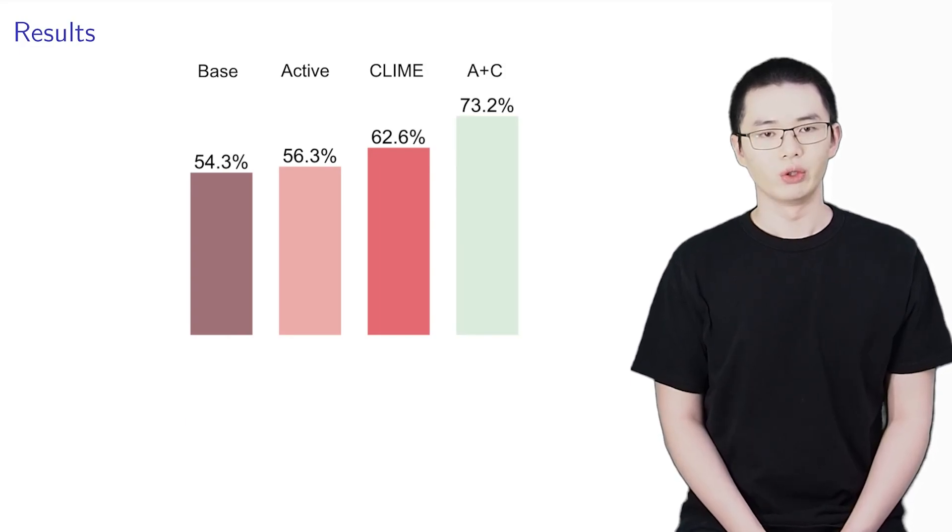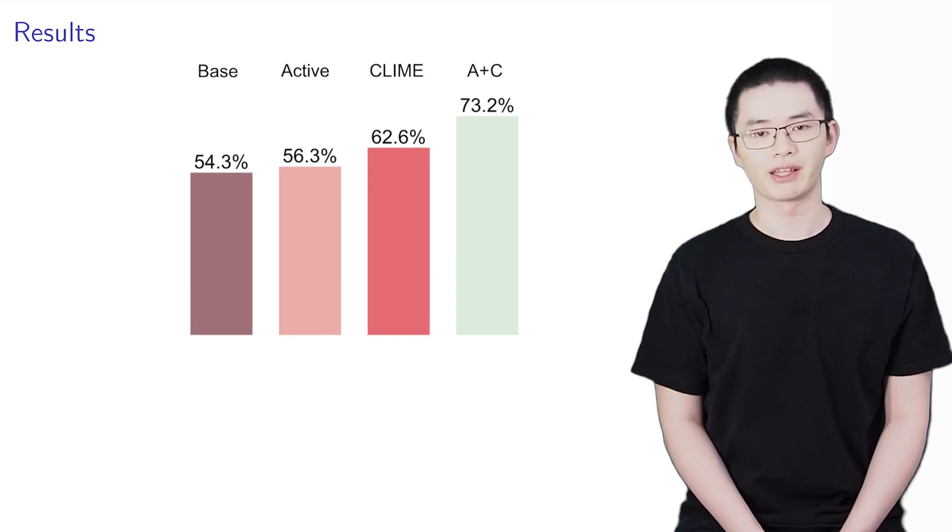Finally, we reach an accuracy of 73.2% by combining active learning and CLIME. This shows that the two methods are complementary, as they provide different signals to our model.